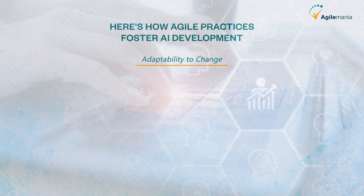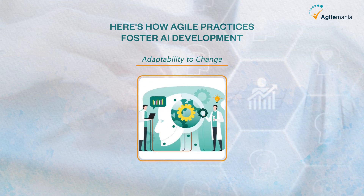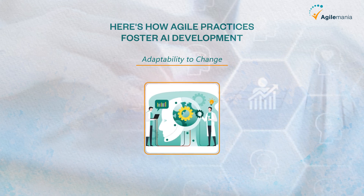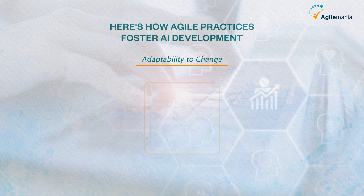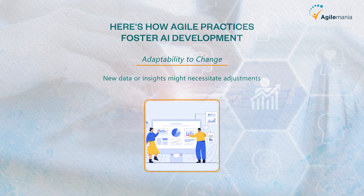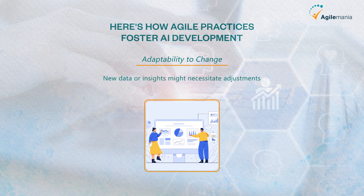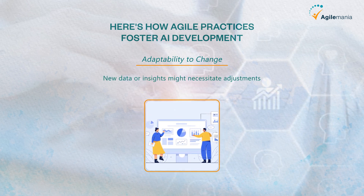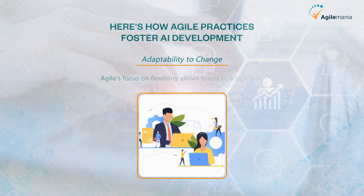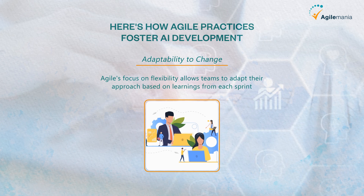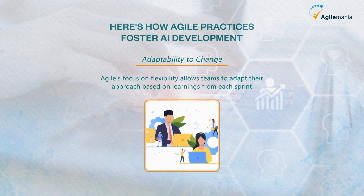Adaptability to change: AI development is rarely a straight line. New data or insights might necessitate adjustments. Agile's focus on flexibility allows teams to adapt their approach based on learnings from each sprint.